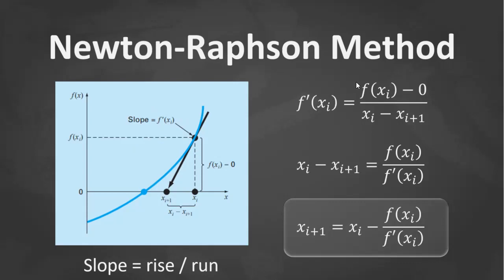So your rise is f(xi) minus 0, and your run is xi minus xi+1. So if we are to rearrange that — cross multiply and rearrange — then xi+1 is equal to xi minus f(xi) over f'(xi).